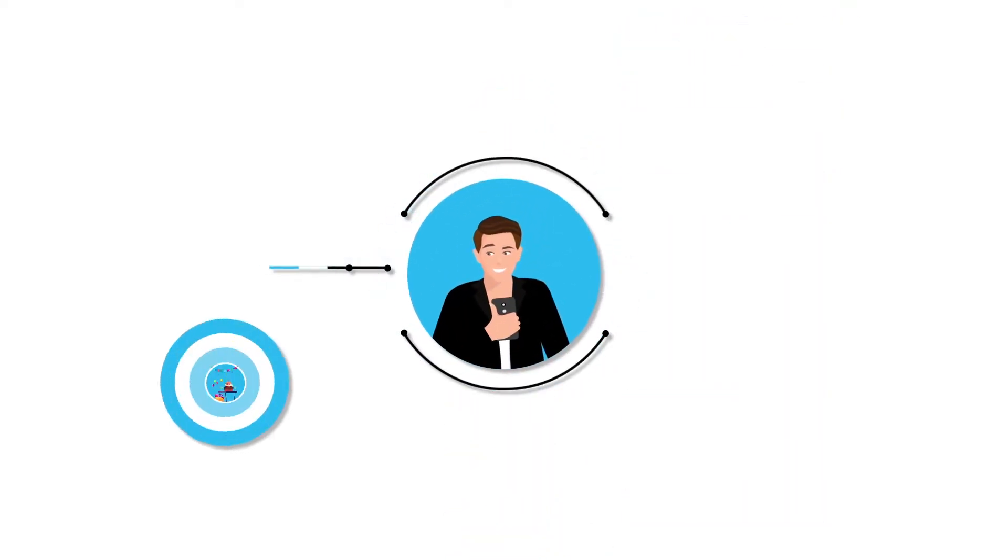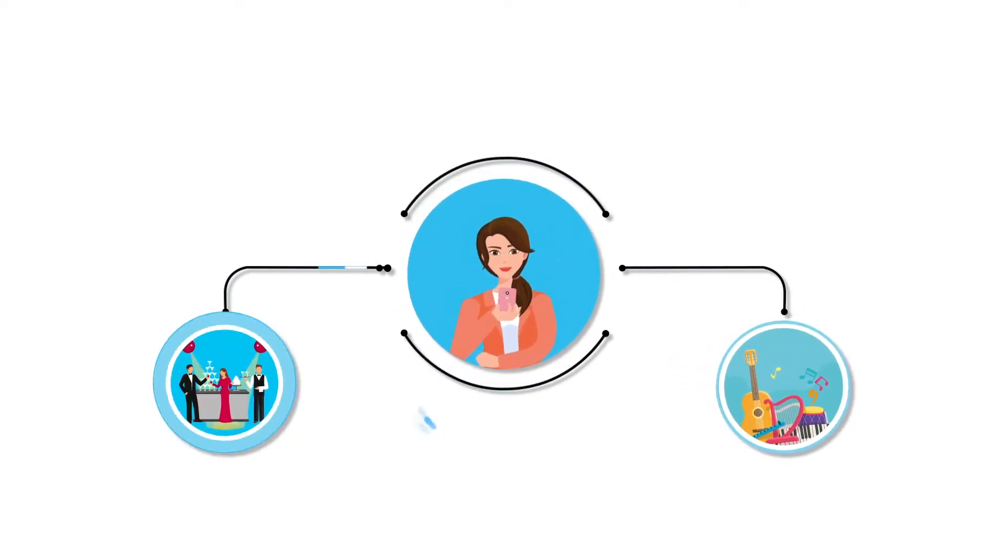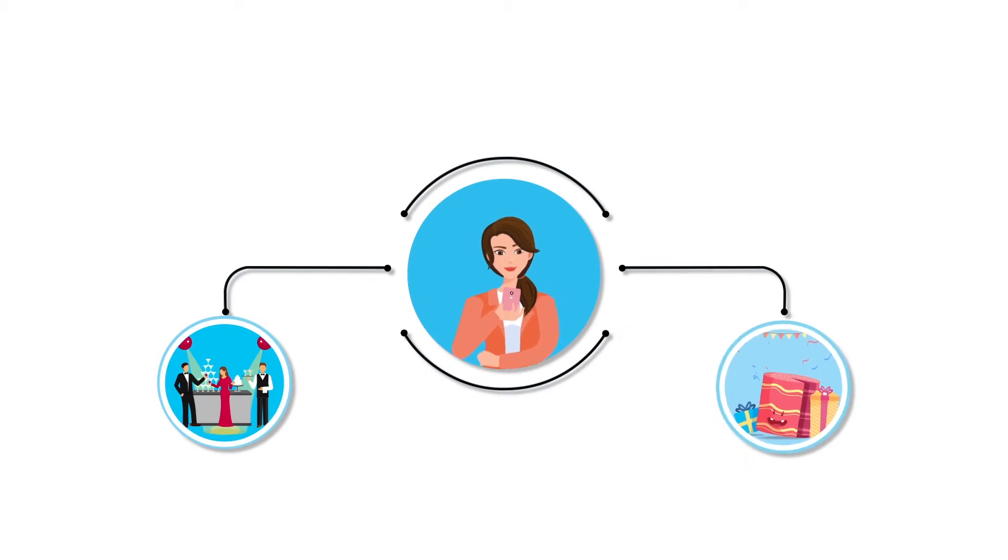Tom started sourcing venues, catering firms, and local magic acts. Helen was put in charge of decoration, fancy balloons, and the all-important cake.